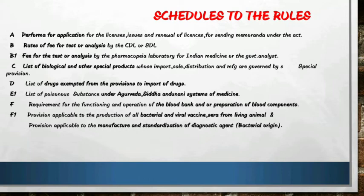Schedule F to the rules covers the requirement for the functioning and operation of blood banks and the preparation of blood components. The trick to remember: F means fruits — when you donate blood, fruits are given, so F is associated with blood banks and preparation of blood components.